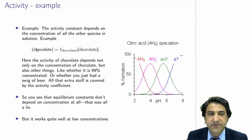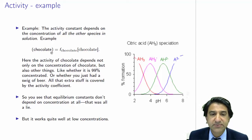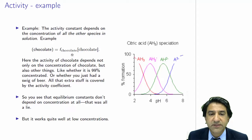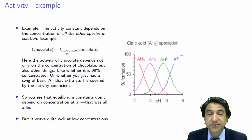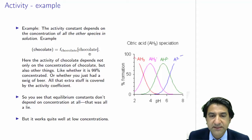Let's look at an example of activity just to get a feel for it. The activity constant depends on the concentration of all the other species in solution. For example, let's look at the activity of chocolate — this is a bit of a silly example. That would equal the activity coefficient of chocolate, F-chocolate, times the concentration of chocolate. The activity of chocolate depends not only on the concentration of the chocolate, but also on other things — for example, whether it's 99% concentrated or has other flavor enhancers.